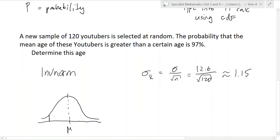We want to know the probability that the mean age of this YouTuber is greater than a certain age. So we don't know this certain age. So we want to know the probability. So if this is equal to 0.97, that area under the curve.